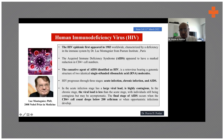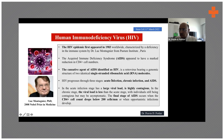The causative agent of HIV is a retrovirus bearing a genomic structure of two identical single-stranded RNA molecules. Because it is an RNA virus, we need RNA-based assays, not DNA assays — so we use RT-PCR and real-time PCR for RNA.